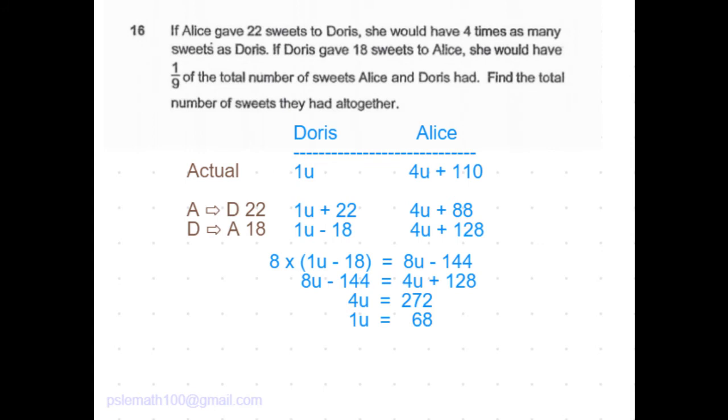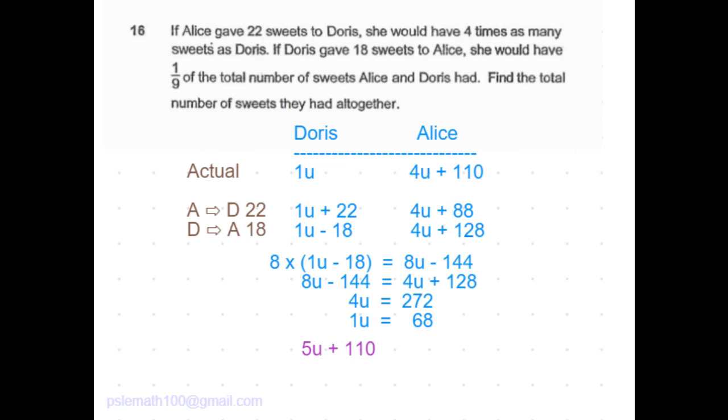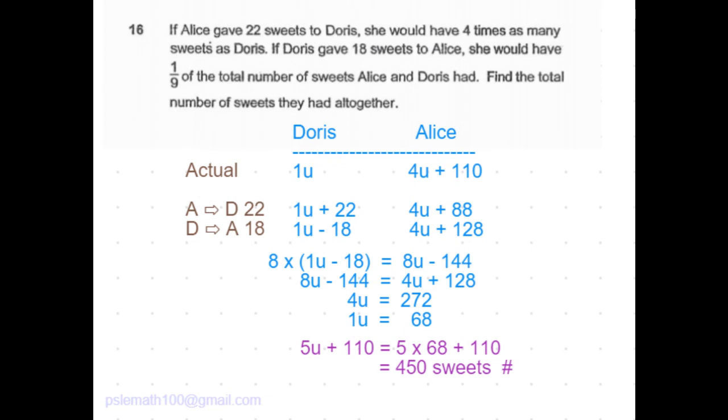The question is, what is the total number of sweets they both had altogether? Doris had 1u and Alice had 4u plus 110. That's a total of 5u plus 110. Five times 68 plus 110 is 450 sweets. So that's the answer to this question.